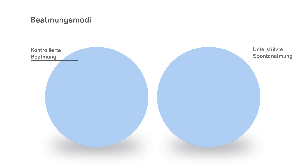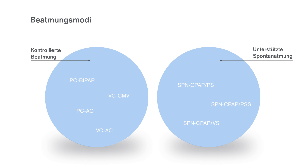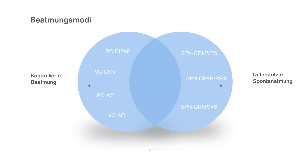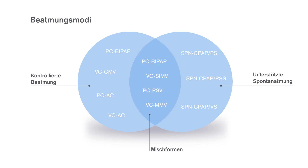Leider lassen sich nicht alle intensiv beatmeten Patienten einer der genannten Gruppen zuordnen. Der Klinikalltag kennt viele Fälle, bei denen die Atmung nicht nur flach, sondern auch unregelmäßig ist. Ein modernes Beatmungsgerät kann auch diese Situation meistern, indem es kontrollierte Beatmungsphasen und unterstützende Modi mischt — es gewährleistet eine stabile Mindestventilation und lässt den Patienten dabei synchron spontan atmen.